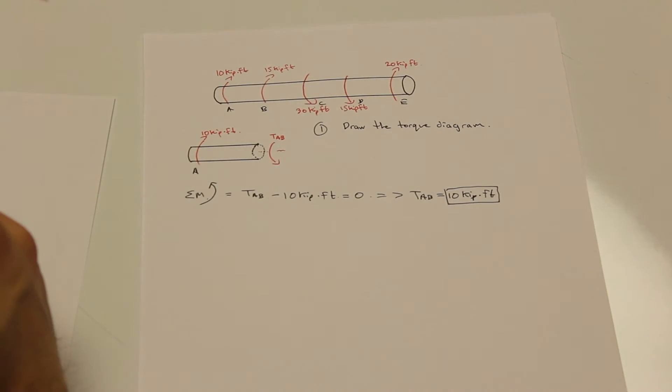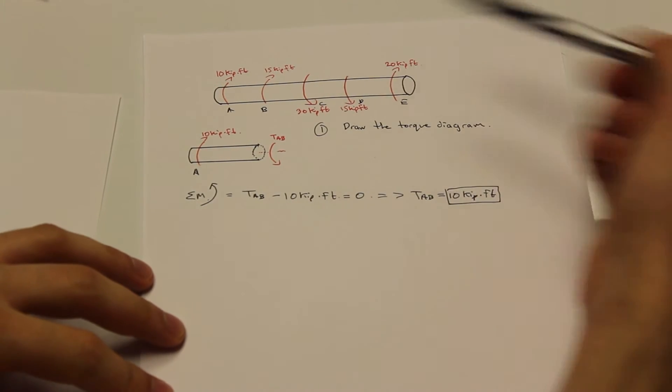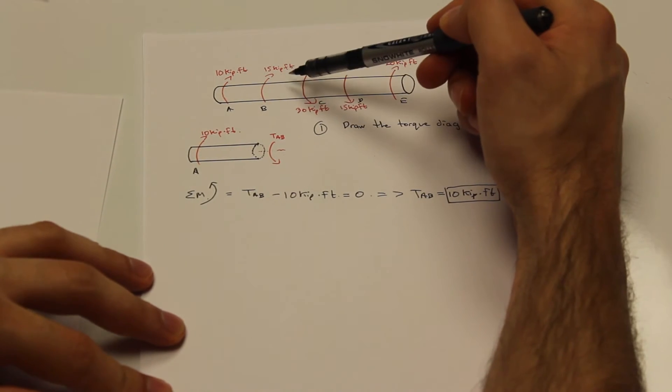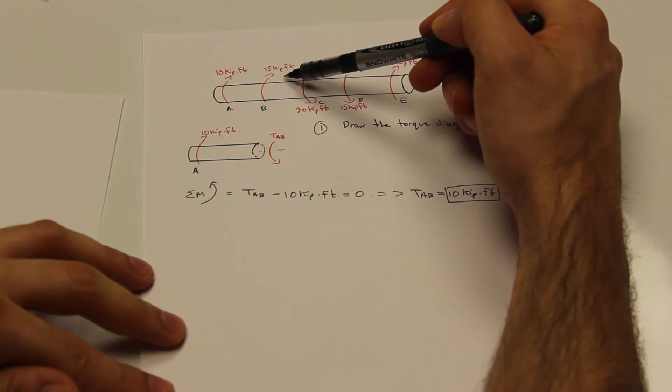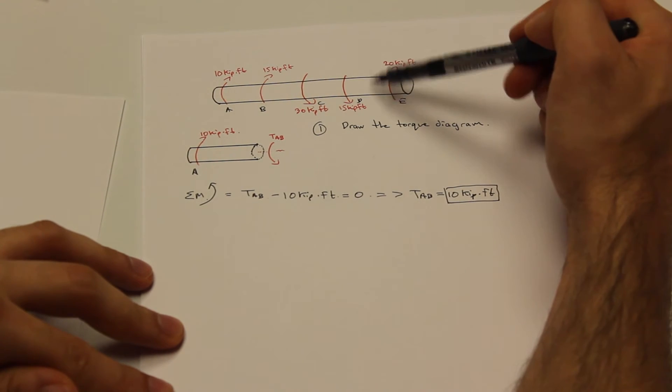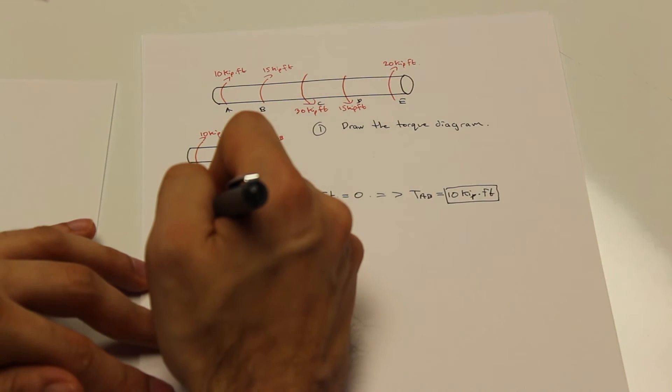Now we're just going to repeat that exact same process, except now each time we're going to cut through the next section. So the next time we're going to cut through BC, CD, and then DE. We're going to do each of those separately.